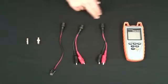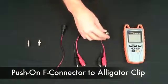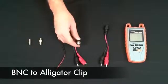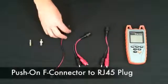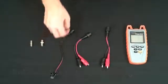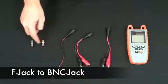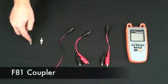The Snapshot comes with everything you need to test. Push on F to alligator clip, BNC to alligator clip, push on F to RJ45, and an F to BNC, and a F81 coupler.